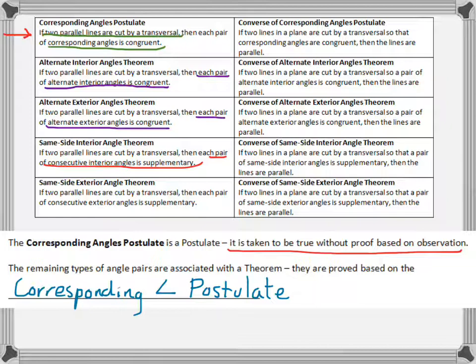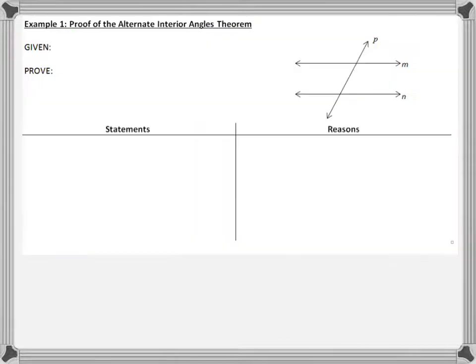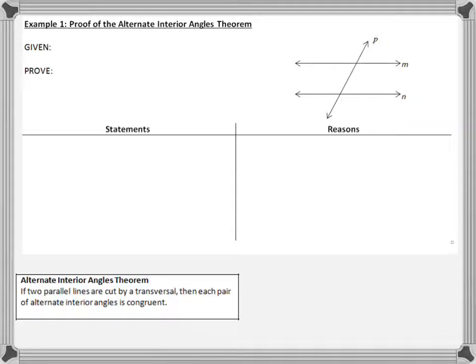Let's see where these theorems originally came from. We're going to build it from the ground up, starting with the corresponding angles postulate. Using that, we'll prove that the alternate interior angle theorem is true.